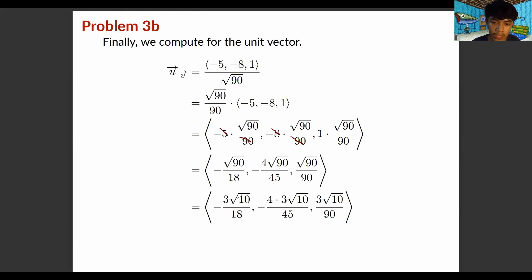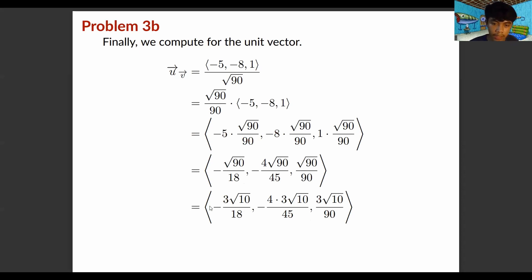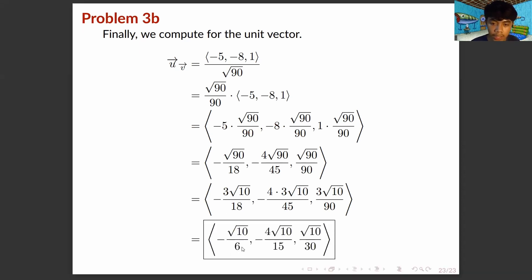The square root of 90 over 90 simplifies to 3 root 10. Computing each component: negative 5 times root 90 over 90 simplifies to negative root 10 over 6; negative 8 times root 90 over 90 simplifies to negative 4 root 10 over 15; and 1 times root 90 over 90 simplifies to root 10 over 30. Therefore, the unit vector is (negative root 10 over 6, negative 4 root 10 over 15, root 10 over 30).